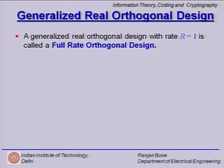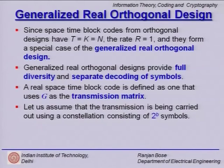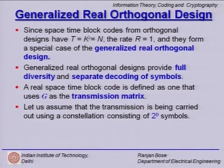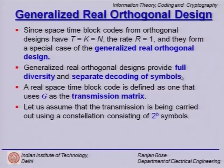Space time block codes from orthogonal designs have t=k=n and rate r=1, forming a special case of the generalized real orthogonal design. The n=2, 4, and 8 orthogonal designs were a special case of the generalized real orthogonal designs with rate r=1. Generalized real orthogonal designs provide full diversity and separate decoding of symbols, so diversity is maintained and single symbol decoding exists, meaning both receiver complexity and decoding time are reduced.